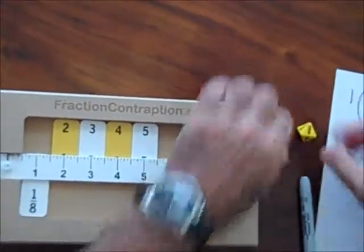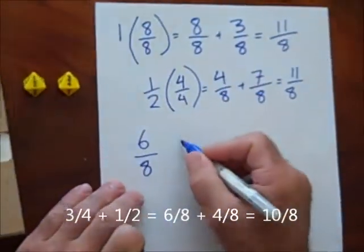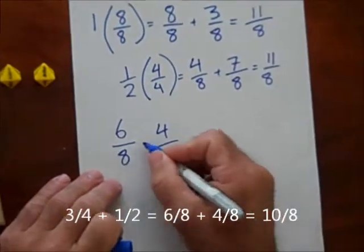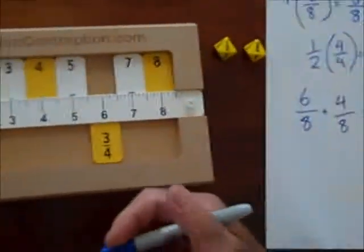6 eighths, 3 quarters is 6 eighths. 1 half is 4 eighths. I add those two together to get 10 eighths. Note your numbers sum to 10.